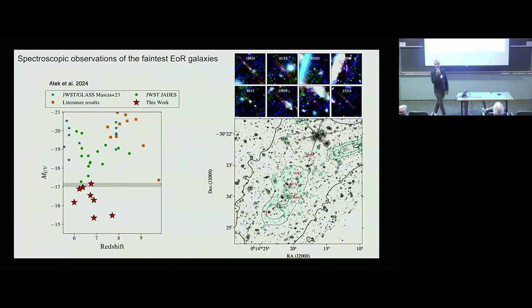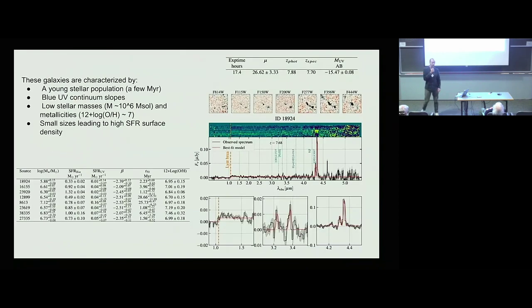So recently with JWST, we got very deep near-spec spectra of the faintest galaxies at the epoch of reionization. It's mainly galaxies with absolute magnitude between minus 17 and minus 15, thanks to gravitational lensing of galaxy clusters in the Uncover collaboration. So this is one example where you can see here, rest frame UV and optical spectrum of a very low-mass galaxy, 10 to the sixth solar masses at redshift almost eight, where you see this beautiful spectrum.